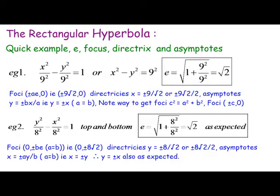Going through the foci: the first example is x squared minus y squared equals 9, or equivalently x squared on 9 minus y squared on 9 equals 1. You'll get the foci at plus or minus 9 root 2, zero, and the directrices are x equals plus or minus 9 over root 2, which we can rationalize the denominator for.